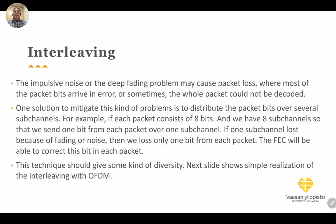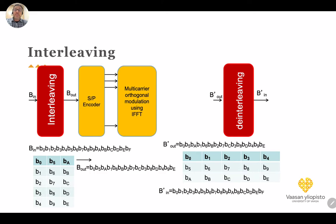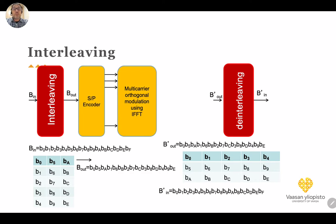Now we talk about interleaving. Interleaving will also provide some diversity. The idea of interleaving is quite straightforward. Remember when we talked about channel coding — in block channel coding it is possible to correct a certain number of bits per packet. For example, if we have a packet length of 8 bits, by adding a few redundant bits we can correct one bit error. By increasing the number of redundant bits we can correct even more, like two bits, but the number of correctable bits is always limited.